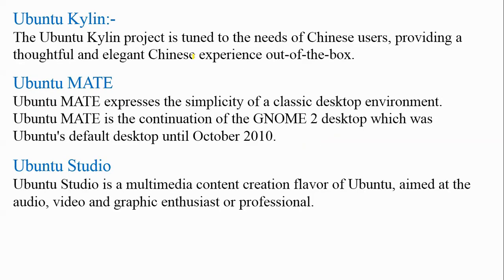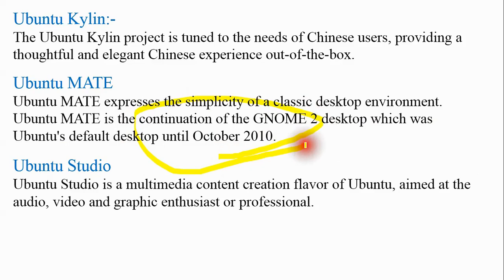The next flavor is Ubuntu Kylin. The Ubuntu Kylin project is tuned to the needs of Chinese users, providing a thoughtful and elegant Chinese experience out of the box. Next is Ubuntu MATE, which expresses the simplicity of a classic desktop environment and is the continuation of the GNOME 2 desktop, which was Ubuntu's default desktop until October 2010. Ubuntu Studio is a multimedia content creation flavor of Ubuntu aimed at audio, video, and graphic enthusiasts or professionals.